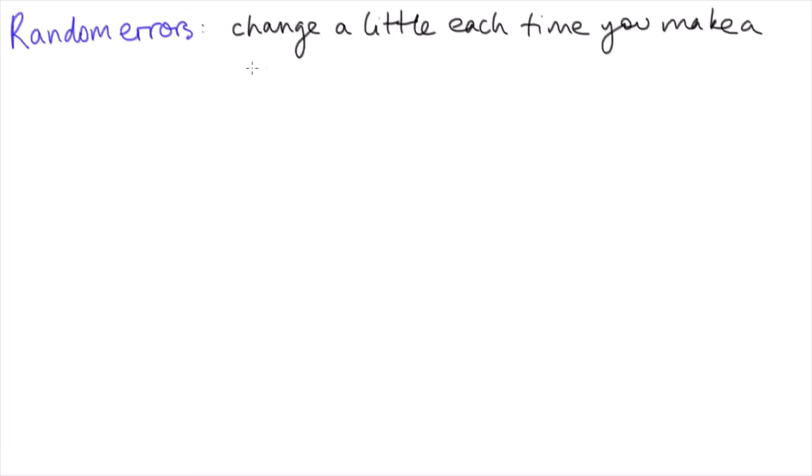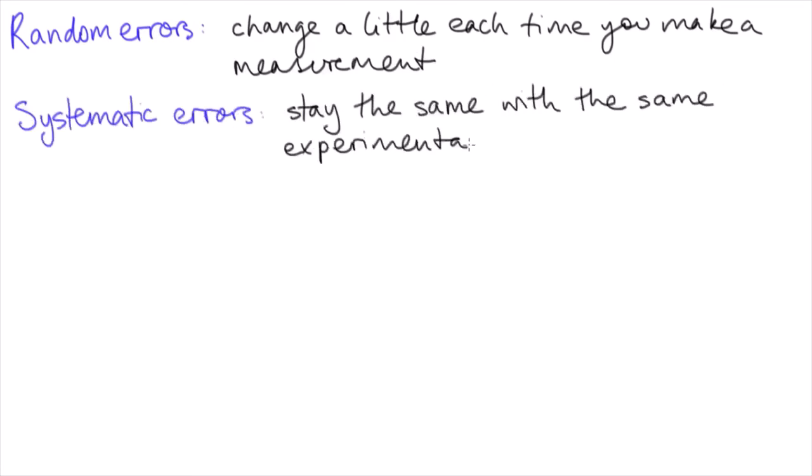Random errors are due to things that change a bit each time you make the measurement, whereas systematic errors remain the same each time you repeat an experiment.